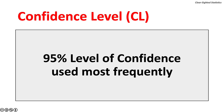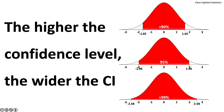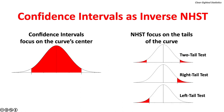95% confidence levels are used most frequently. Occasionally, 99% or 90% confidence levels are used. As shown in the red area of these three normal curves, the higher the confidence level, the wider the confidence interval. As we shall see when we move on to null hypothesis significance testing, confidence intervals are the inverse of null hypothesis significance tests. This is because confidence intervals focus on the center of the curve, while null hypothesis significance tests focus on one or both of the curve's tails.